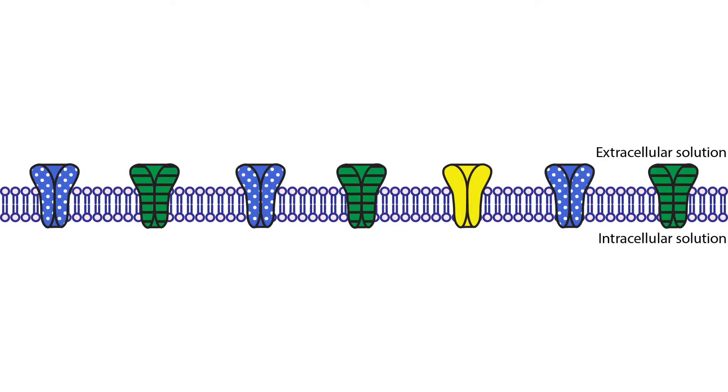Embedded throughout the neuronal membrane are ion channels. Ion channels are proteins that span the width of the cell membrane and allow charged ions to move across the membrane. Ions cannot pass through the phospholipid bilayer without a channel. Channels can be opened in a number of different ways. Channels that open and close spontaneously are called leak or non-gated channels. Channels that open in response to a change in membrane potential are called voltage-gated. Channels that open in response to a chemical binding are called ligand-gated.